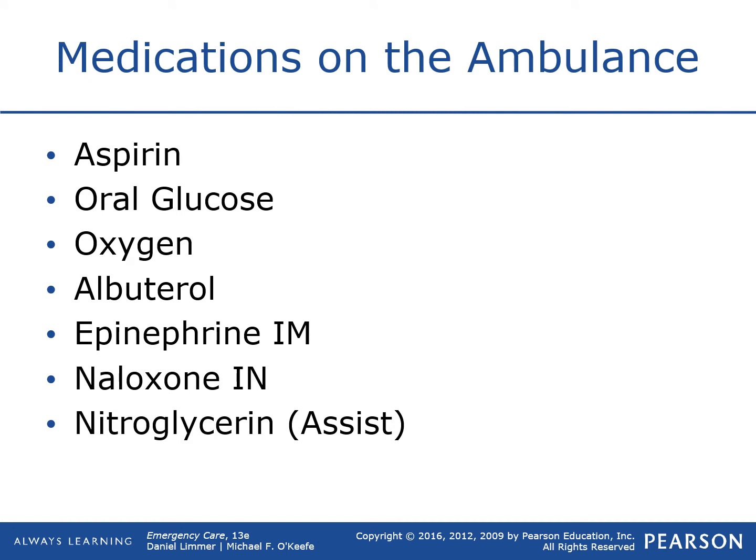We'll be discussing medications that we give as EMTs. We're also going to talk about general pharmacology terms and some things we need to know. We'll touch briefly on medications that patients take at home themselves, and we'll wrap up with ALS assisting skills and talking about IVs. As an EMT, you'll be able to give the following medications on the ambulance: aspirin, oral glucose, oxygen, albuterol, epinephrine, naloxone, and you can assist people with their nitroglycerin.